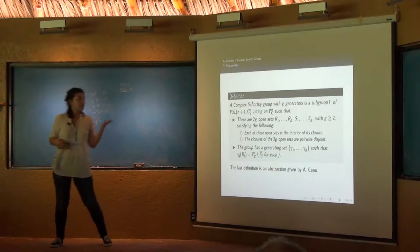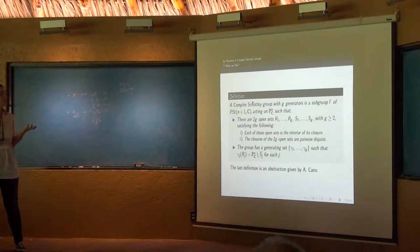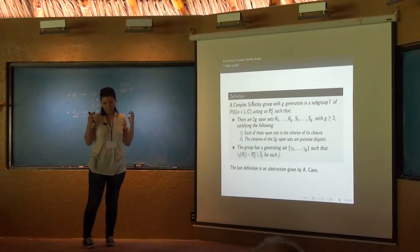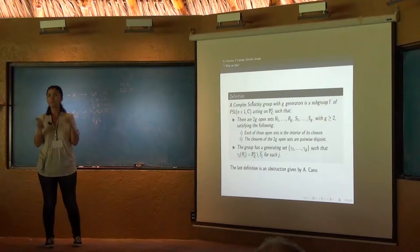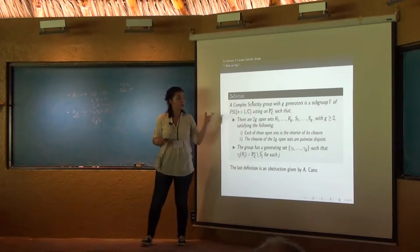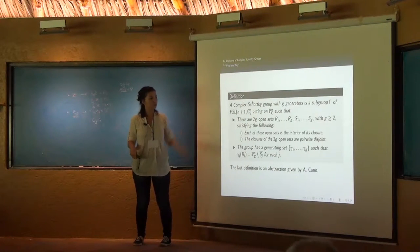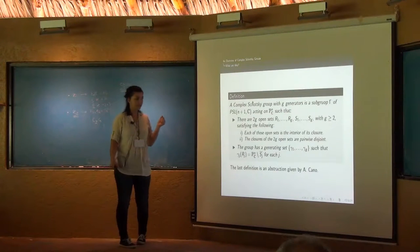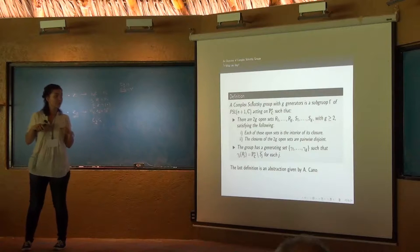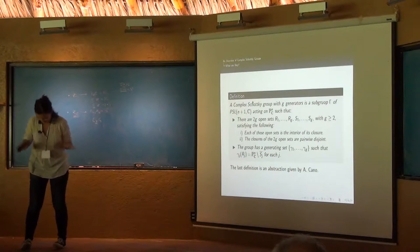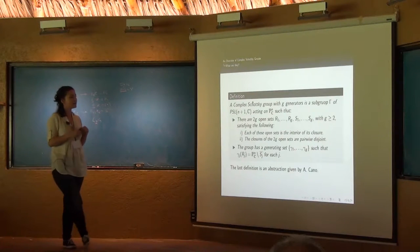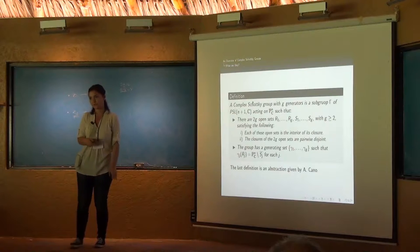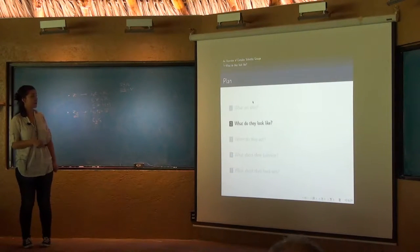And the definition is that complex Schottky groups is a subgroup of PSL(n+1,C) acting in the projective space, such that you need G open sets, R_1 to R_g with g greater than 2, satisfying the following. Each of these open sets is in the interior of itself, and the closures of them are pairwise disjoint. So the group is generated by gamma_1, gamma_2, satisfying the ping-pong dynamics.